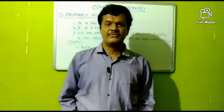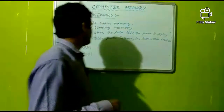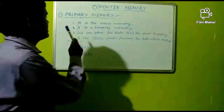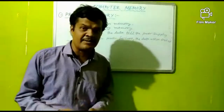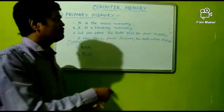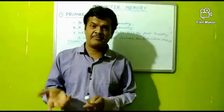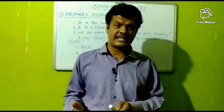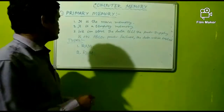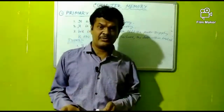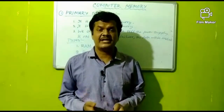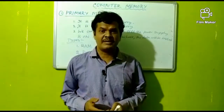Primary memory is the main memory of the computer system. It is temporary memory — that means we can store data only while the power supply is on. After a power supply failure, the data will be lost. It is of two types: RAM and ROM.